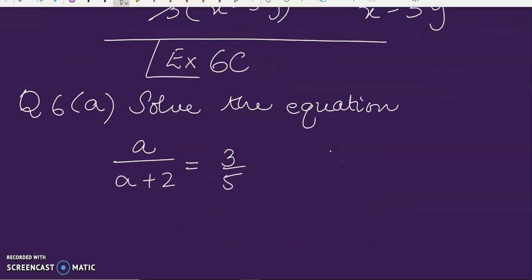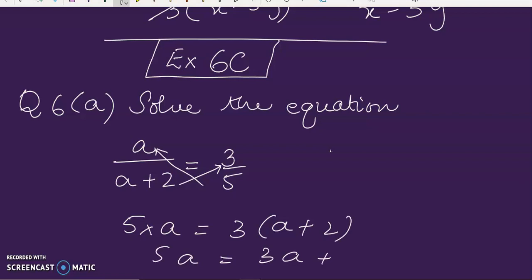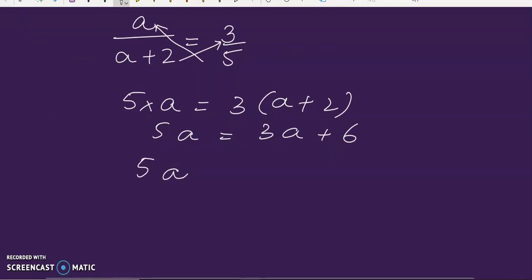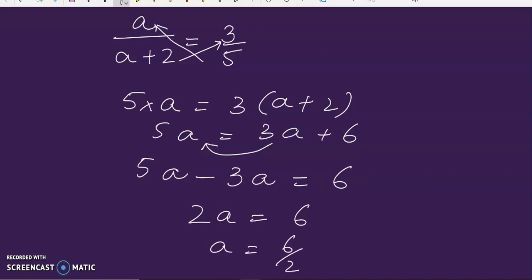Now we go to the next exercise, 6C, and we do question number 6 and it's a part. We have to solve the equation. Here we have two fractions, so we cross multiply these. 5 times a is equal to 3 times a plus 2, so we get 5a is equal to 3a plus 6. Solving it we get 5a. Now this 3a is being added over here, so jab yi dusri side per jai, it will be subtracted and we get 2a equals 6, so we get 6 by 2. Hence a is equal to 3 is our answer.